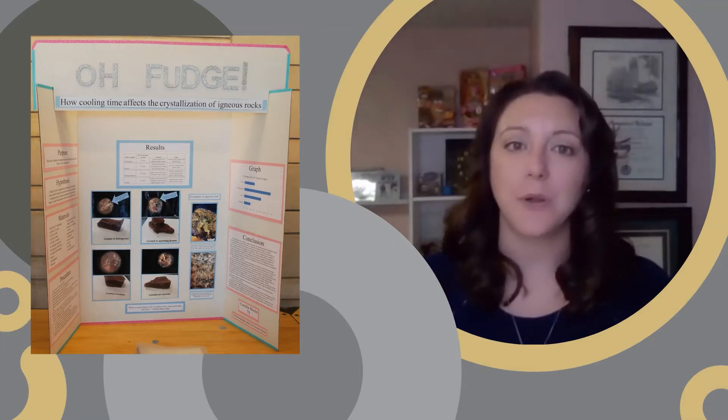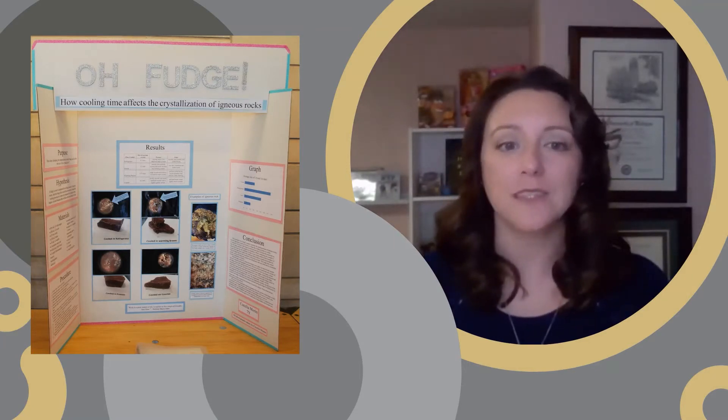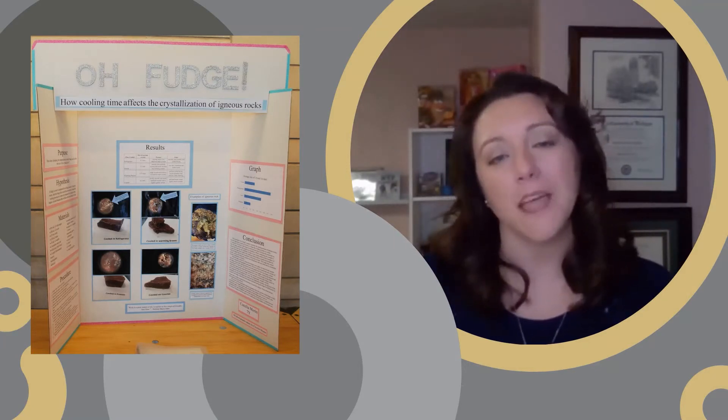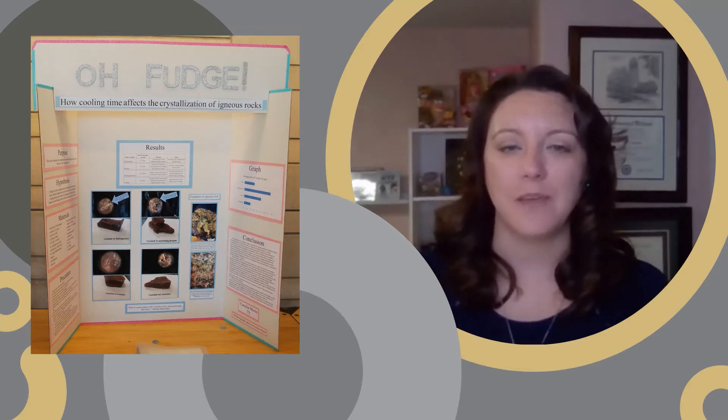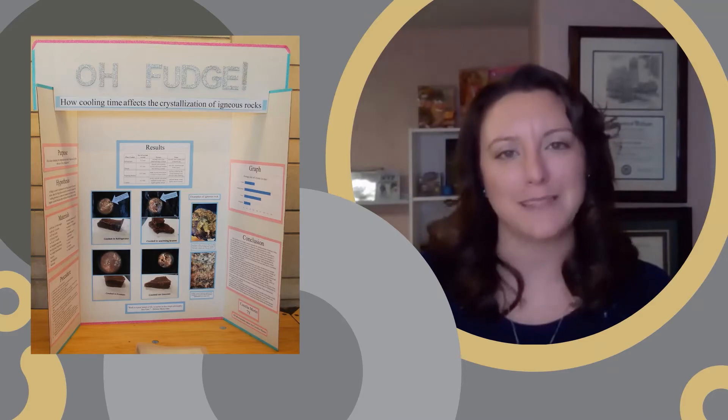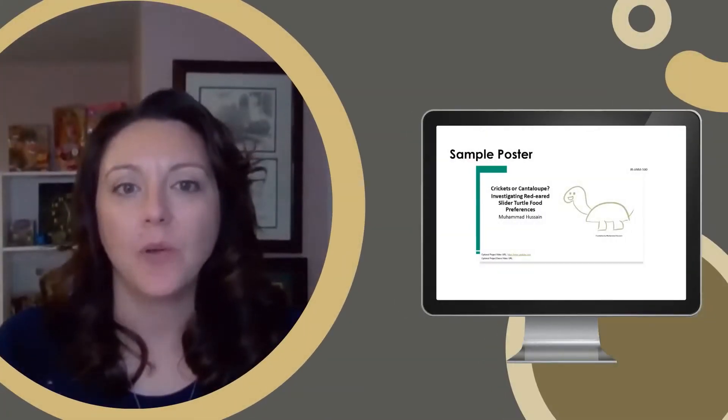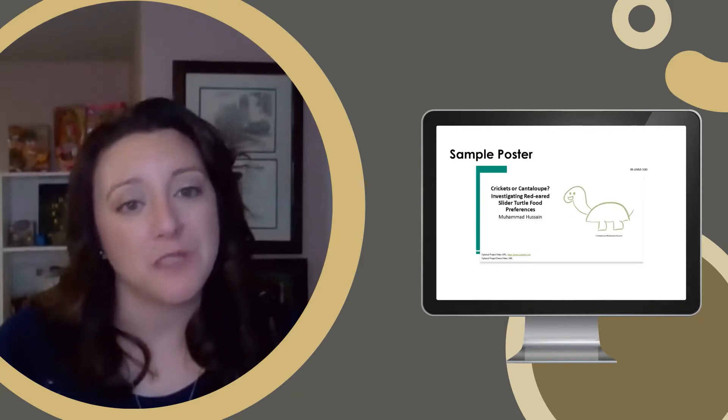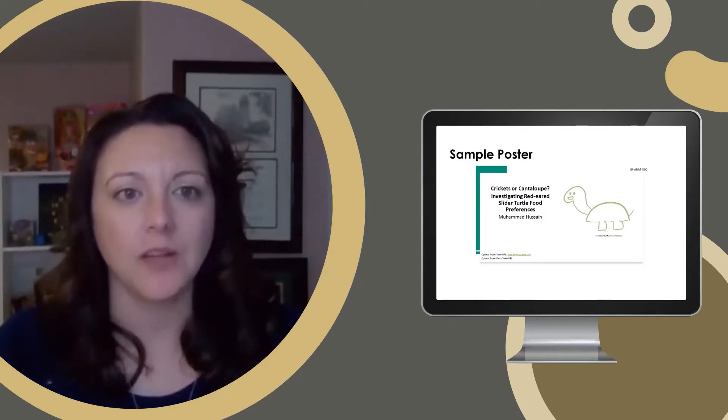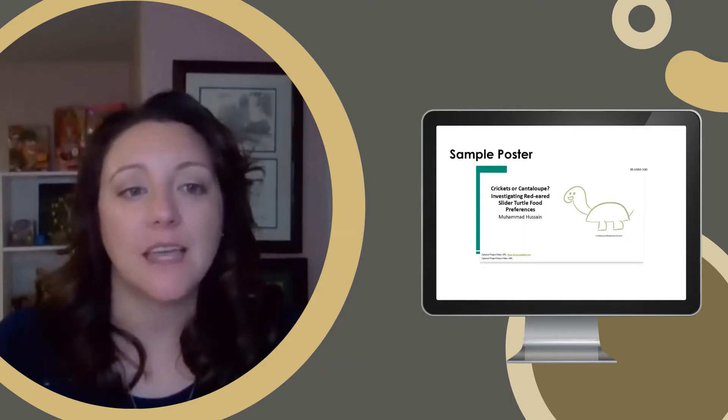Usually at the science fair in person you would create a trifold display board for your poster display like the one you see on the screen now. However, in our virtual fair environment our posters will need to look a little bit different. In this video we're going to focus on creating your digital poster. If you still want to make a trifold display board you can do that, but you will need to take close clear pictures of each section of your board and upload them to follow the format of our digital poster.